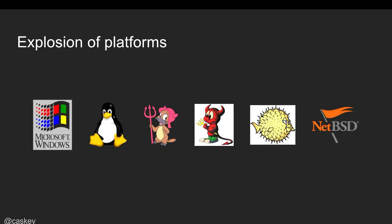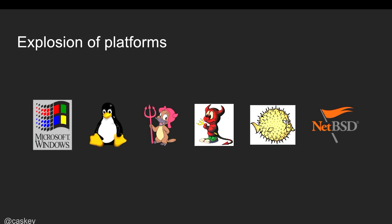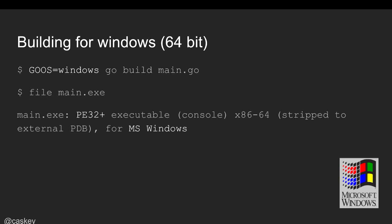Thinking back to our Hello World example — let's say a co-worker sees my program and says their system runs Windows and they'd love a Windows version. If I want to take that exact same program and build it for Windows, I only have to set one environment variable. On my Linux build environment, I set the GOOS environment variable to 'windows', run 'go build main.go', and instead of a 'main' binary I get 'main.exe' — a PE32 console executable for MS Windows. And they ask: what DLLs do I need? None. No .NET, no Mono runtime. Just run it.